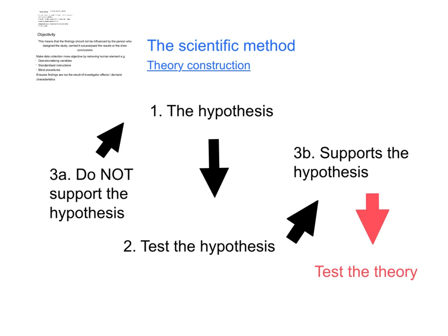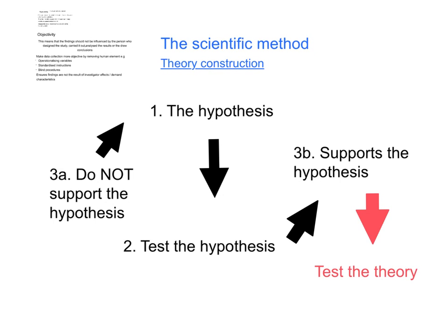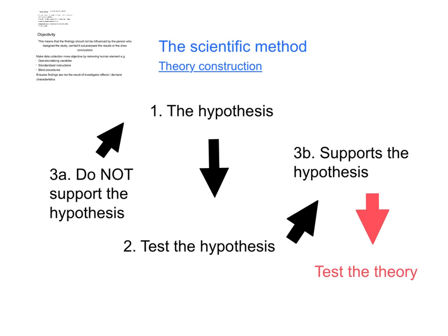The next part of the major features of science is the scientific method. The scientific method includes theory construction, which is a collection of general principles that explain observations and facts.